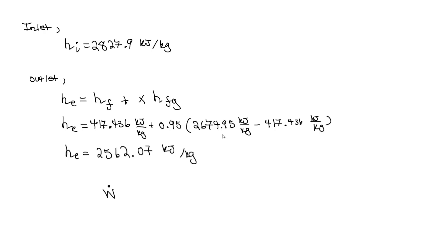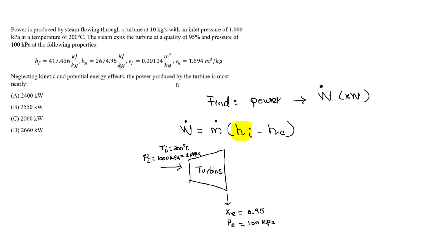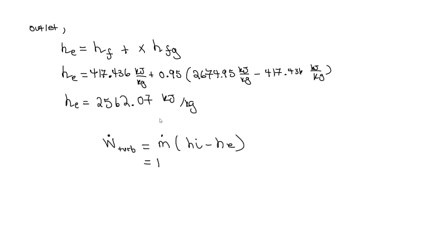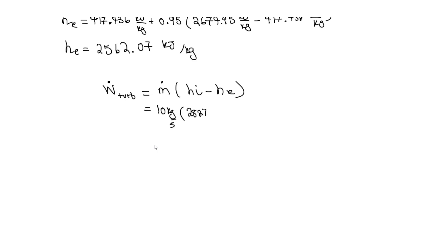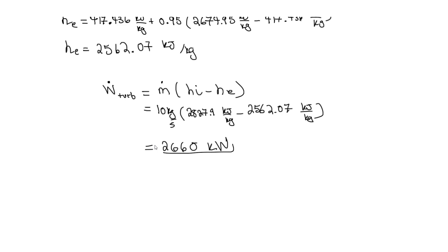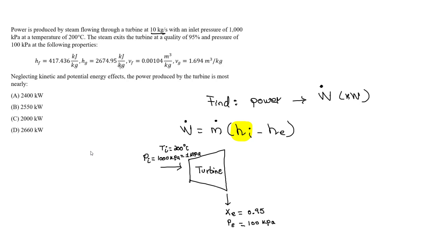Now we can use the turbine work equation: W-dot equals mass flow rate times (H-inlet minus H-exit). The mass flow rate is 10 kg/s, H-inlet is 2827.9 kJ/kg, and H-exit is 2562.07 kJ/kg. Solving, the work done by the turbine is approximately 2660 kilowatts. Going back to the answer choices, this corresponds to answer D.